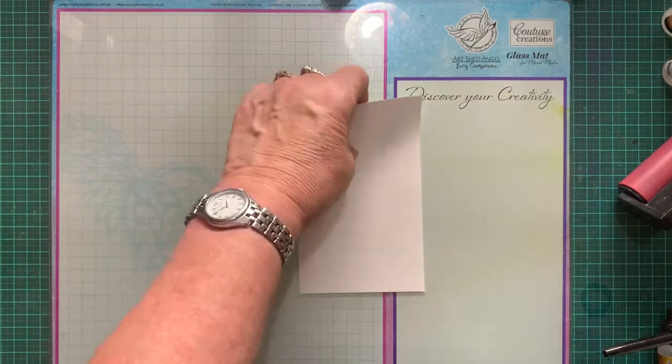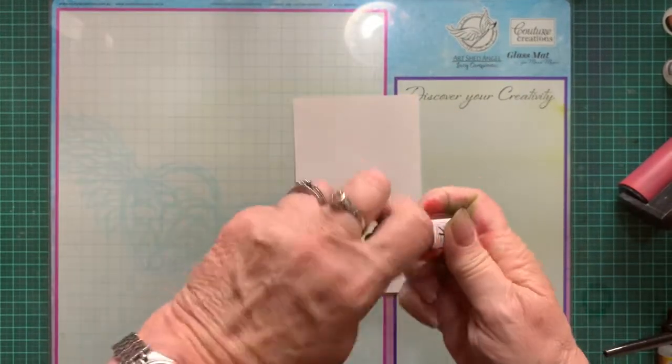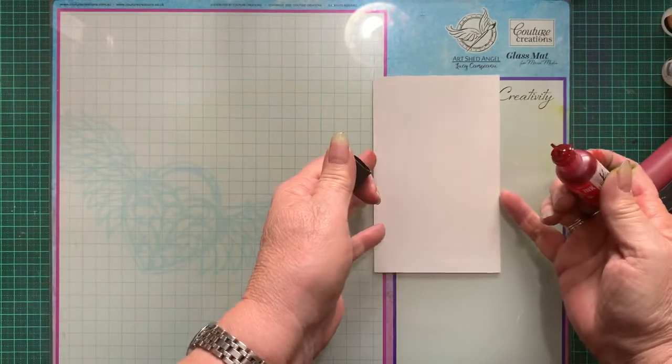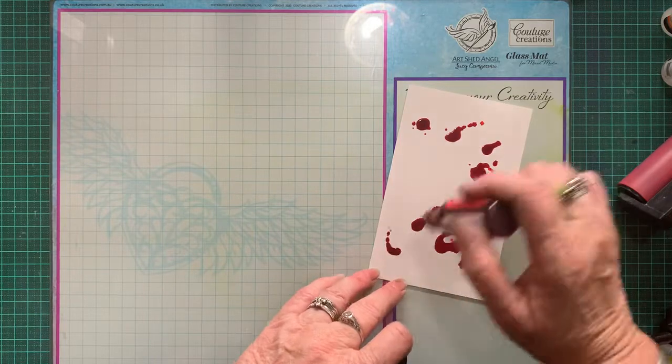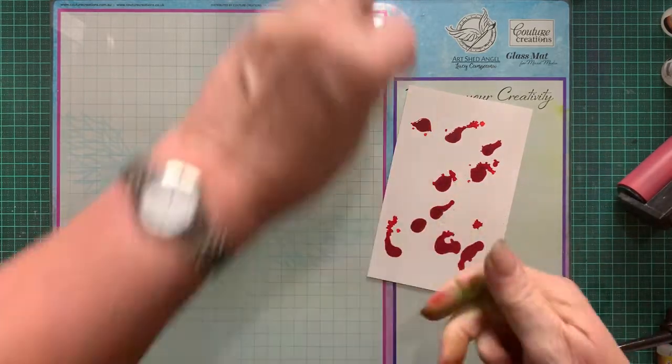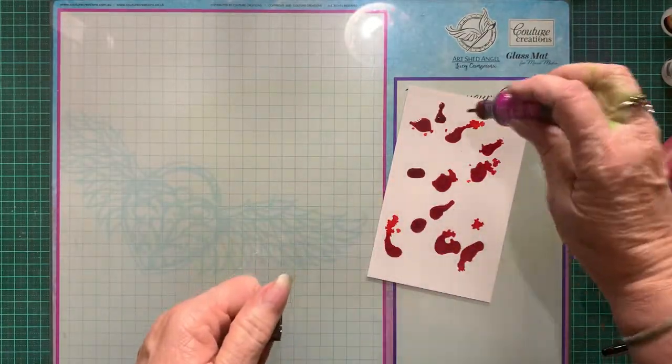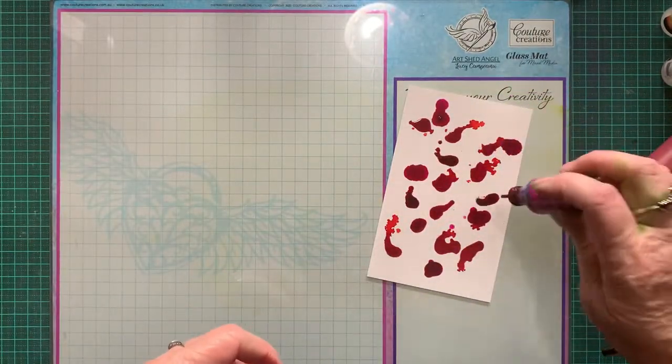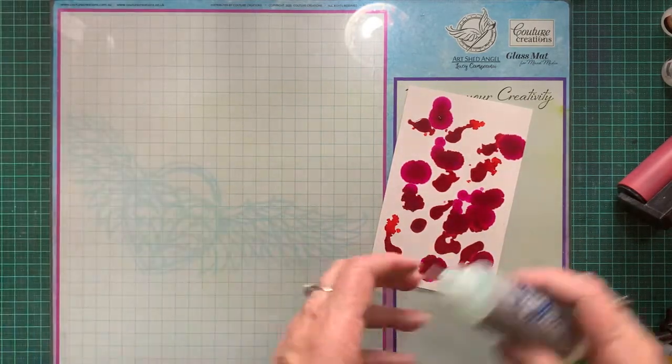We'll get another one. This time we're going to add the ink first. We'll put some ink on there, we'll do red and purple, let's see how they go together. And then we'll add the blending solution.